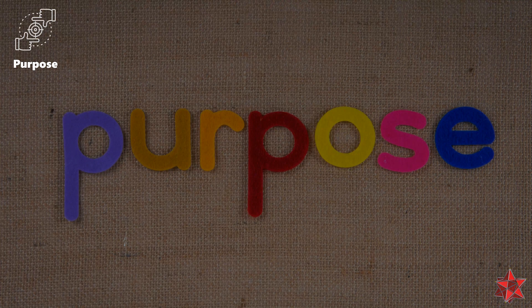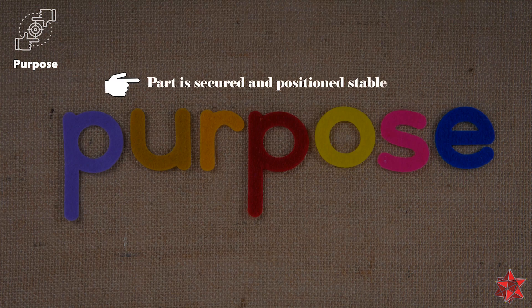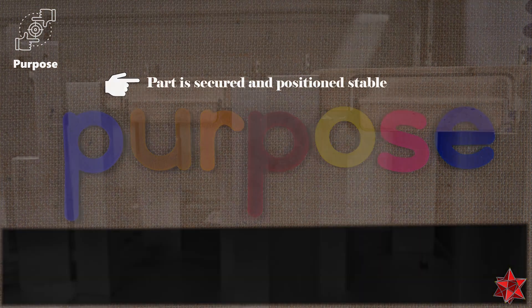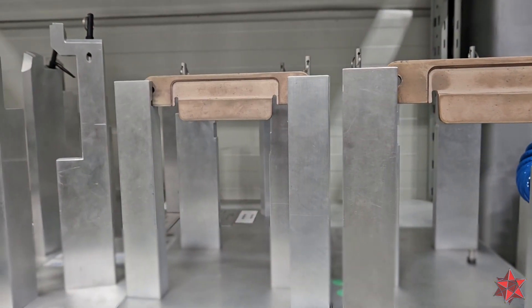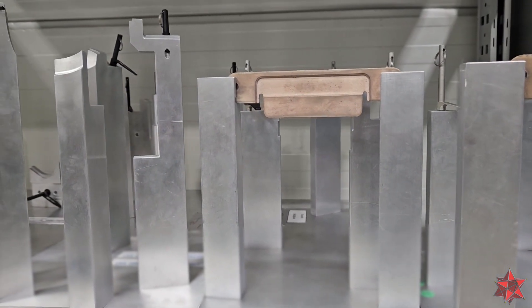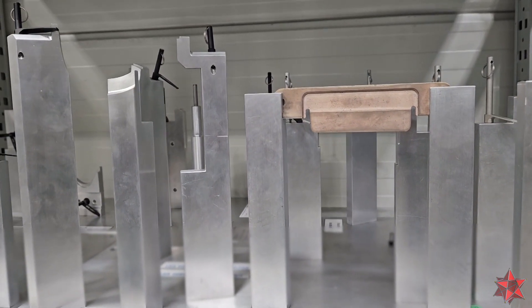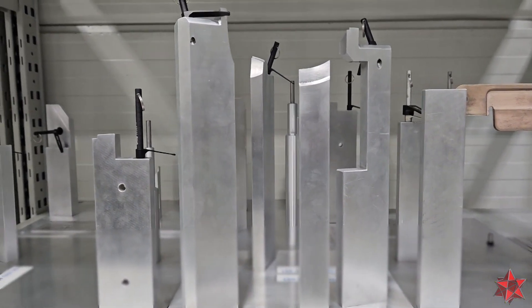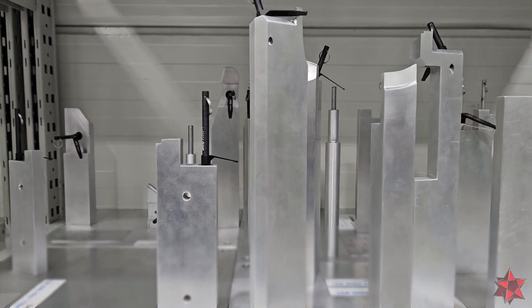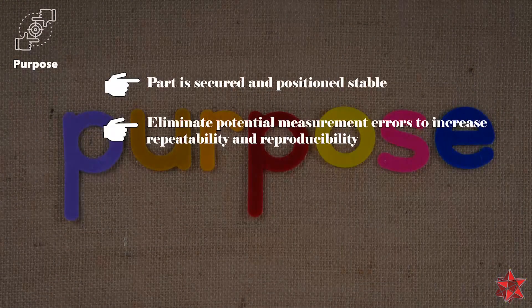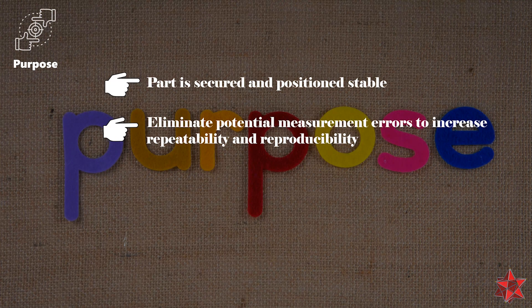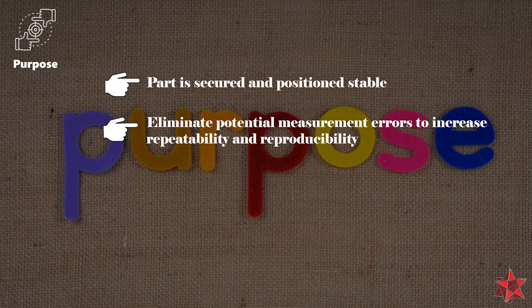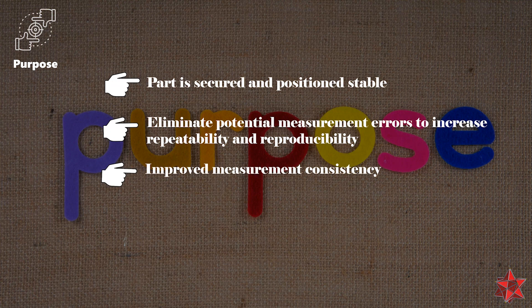Measurement fixtures' primary function is to ensure that the part being measured is securely and stably positioned. We eliminate any potential source of measurement error and achieve repeatable and reproducible results as a result. Not only that, but the advantages of using fixtures include increased measurement consistency, reduced human error, and overall improved efficiency.